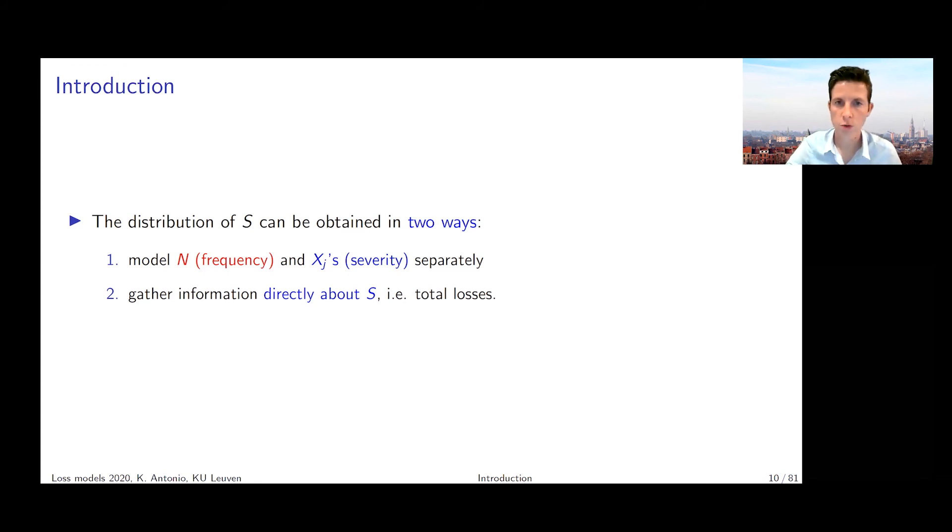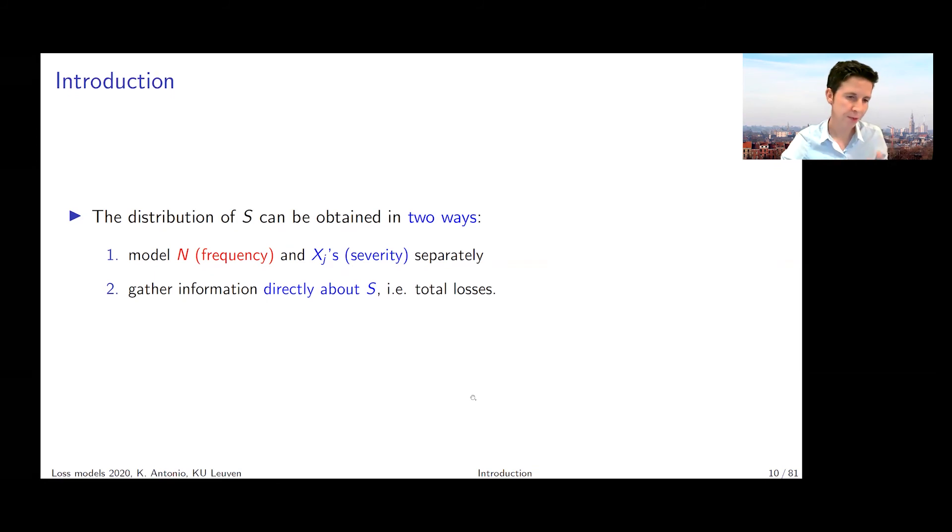I would indeed recommend to collect the observations at the most granular level possible. The first reason is if you have the data at the most granular level possible, then you can always go to the aggregate level by adding the losses in the appropriate way. But you cannot do that the other way around. If you collect the data at the level of S, then you cannot go back to extracting from this S detailed information about the distribution of N and the distributions of the Xⱼ.